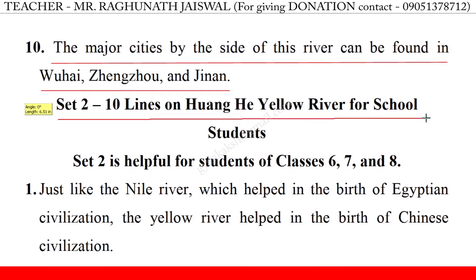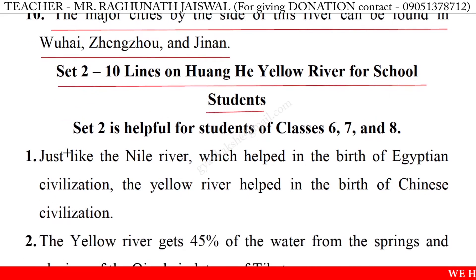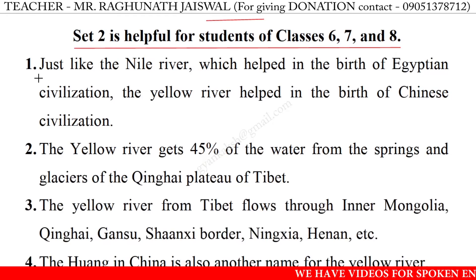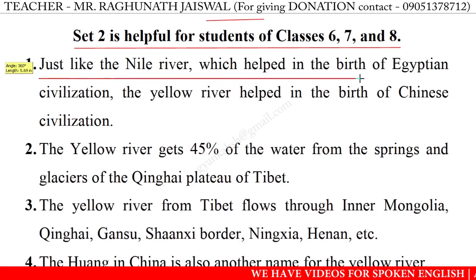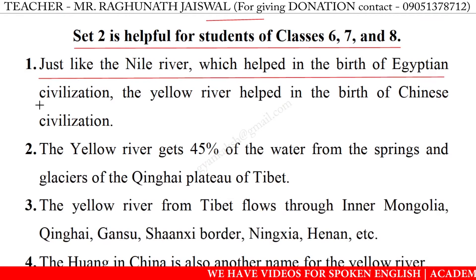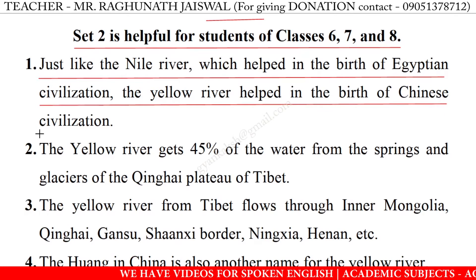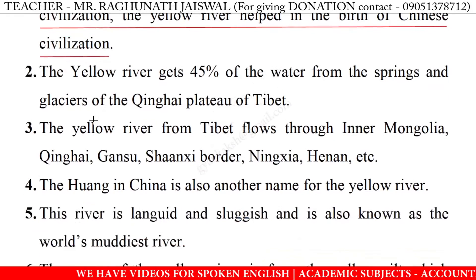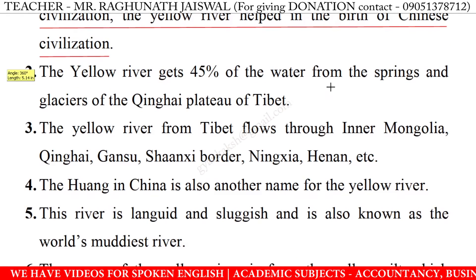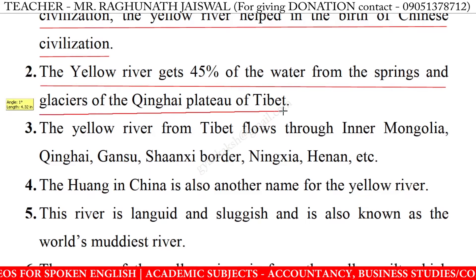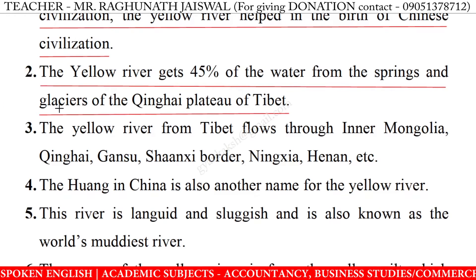10 lines on Huanghe Yellow River for school students, classes 7 and 8. 1. Just like the Nile River which helped in the birth of Egyptian civilization, the Yellow River helped in the birth of Chinese civilization. 2. The Yellow River gets 45 percent of the water from the springs and glaciers of the Qinghai Plateau of Tibet.